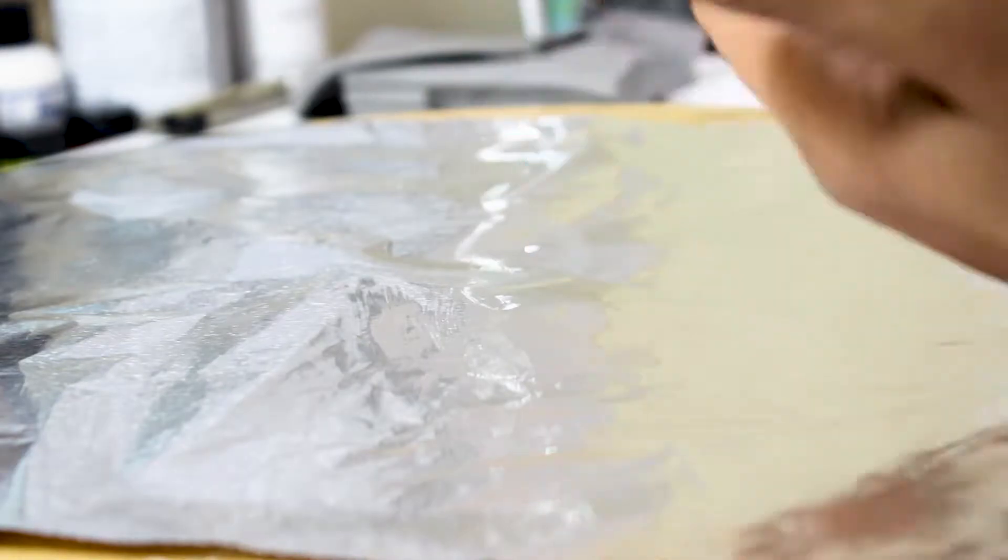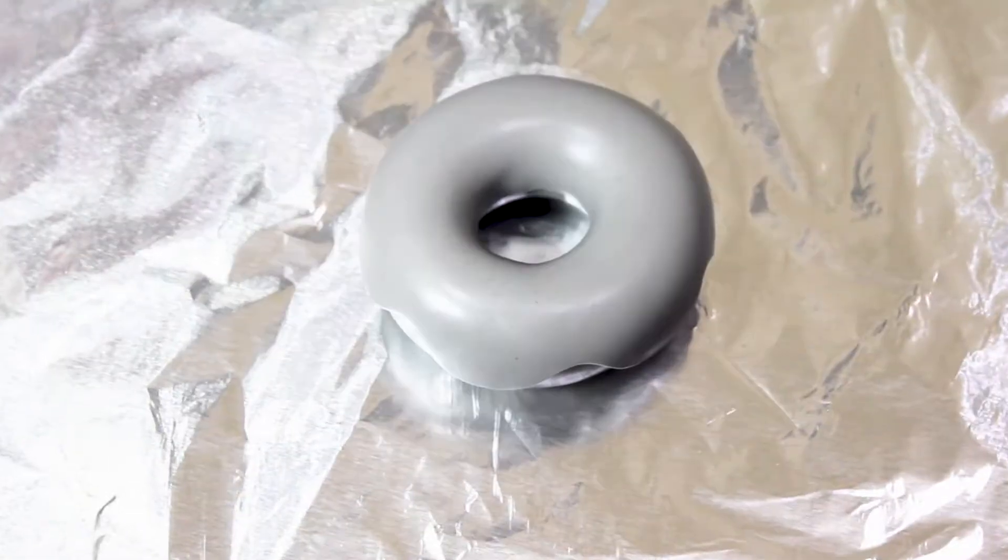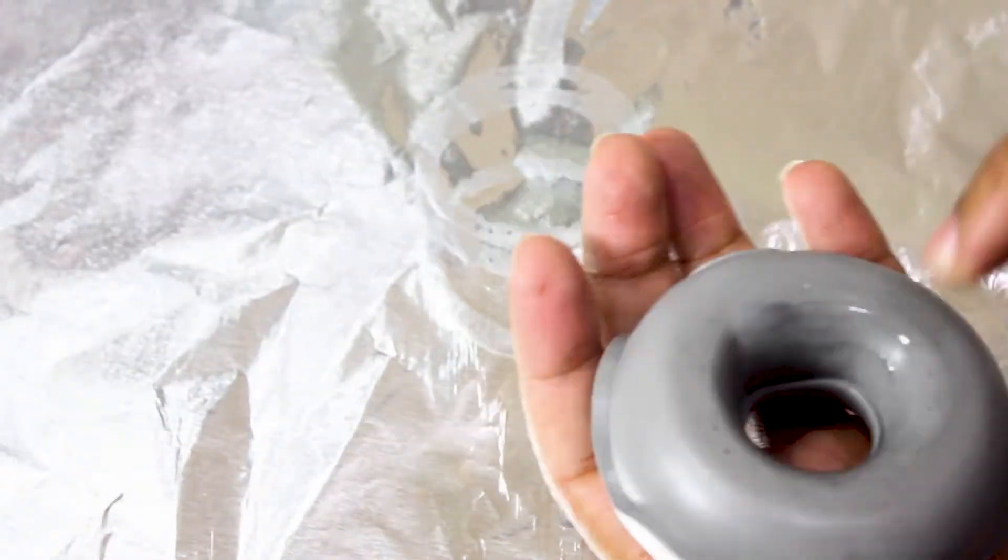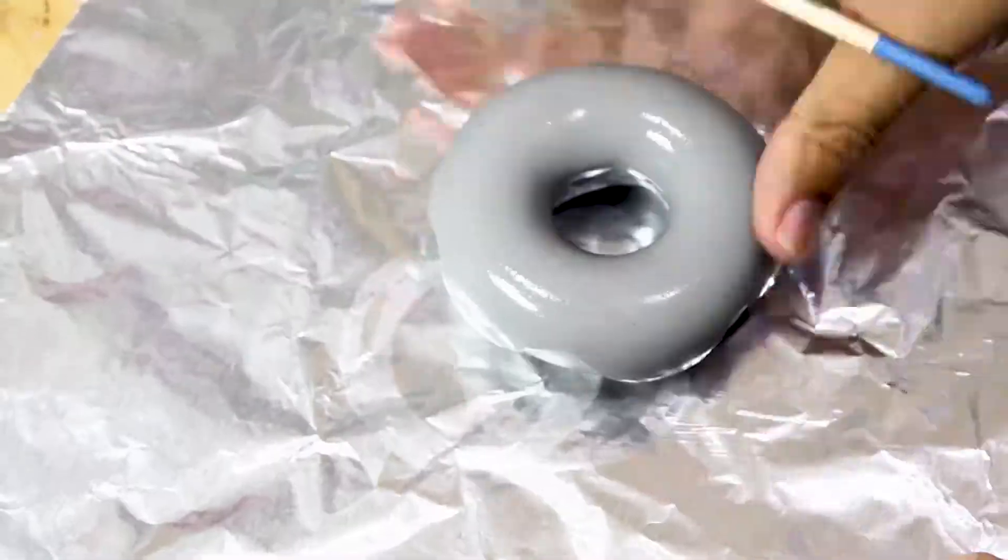Next, you're going to take alcohol, 90%. You're going to smooth it out as much as you can. Get away all the fingerprints and crazy bumps that are possibly going to be within your clay.